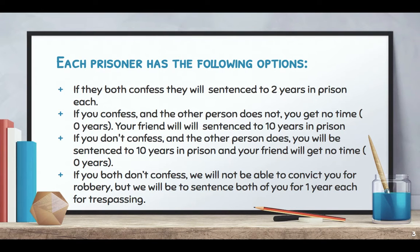Here are the outcomes. If you both confess, each of you gets two years in prison. If you confess and your friend does not, you go home with zero years and your friend spends 10 years in prison. If your friend confesses but you don't, you spend 10 years and he goes home. And if both of you don't confess, they can only sentence you for trespassing — one year each.